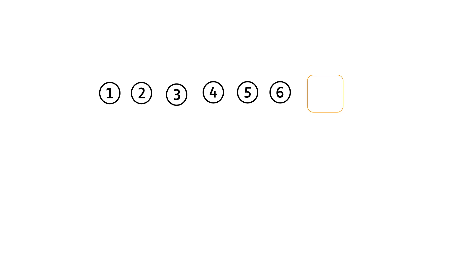What will come next to 6? Let us identify the rule. The first thing we can see is this is a forward counting, or the next number is 1 greater than the previous number. So after 6 we will have 7.